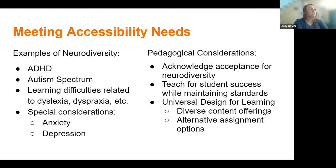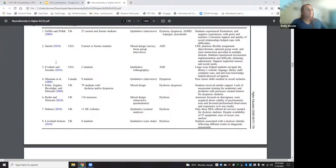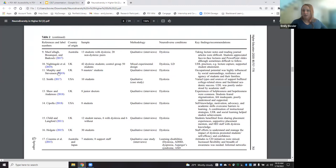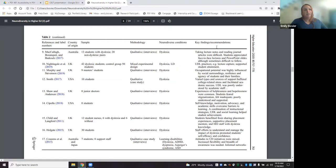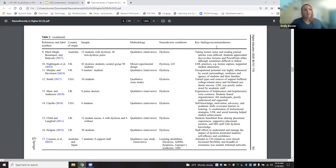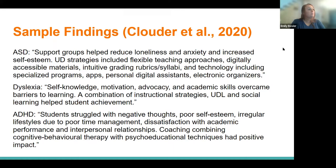I want to share some sample findings — I've selected three neurodiverse conditions I found to be most impactful. The reference I linked to went through dozens of studies that looked at the experience of neurodiverse students in higher education, highlighting which neurodiverse condition was focused on and key findings and recommendations from each study. I just chose to highlight a few that I found impactful and that might give us a platform for discussing a little more.